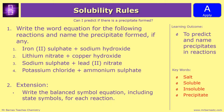That's everything new you need to know from the video. So we've got a few questions for you to have a go at - four questions with an extension - which are to write the word equation for the following reactions and name the precipitate formed, if any. So you've got iron 2 sulfate plus sodium hydroxide, lithium nitrate and copper hydroxide, sodium sulfate and lead 2 nitrate, and potassium chloride plus ammonium sulfate. There is an extension, which is to write the balanced equations and include your state symbols. To be able to do that, you need to remember the ions and their charges.